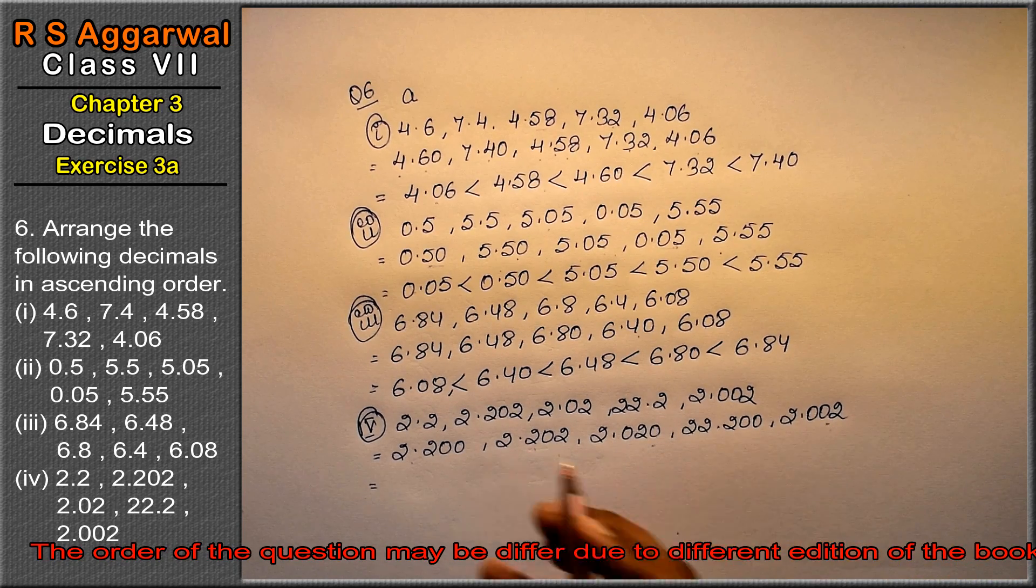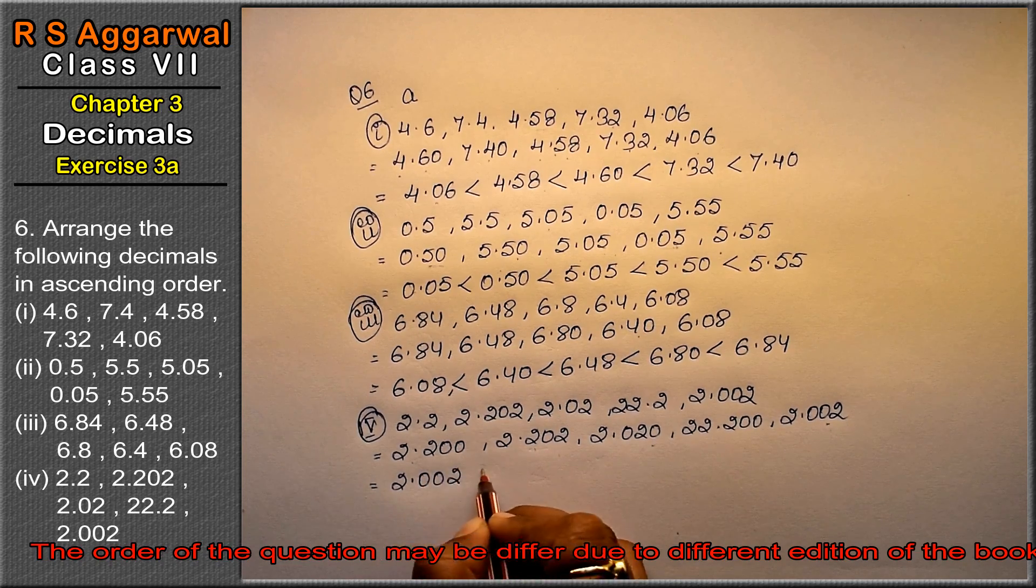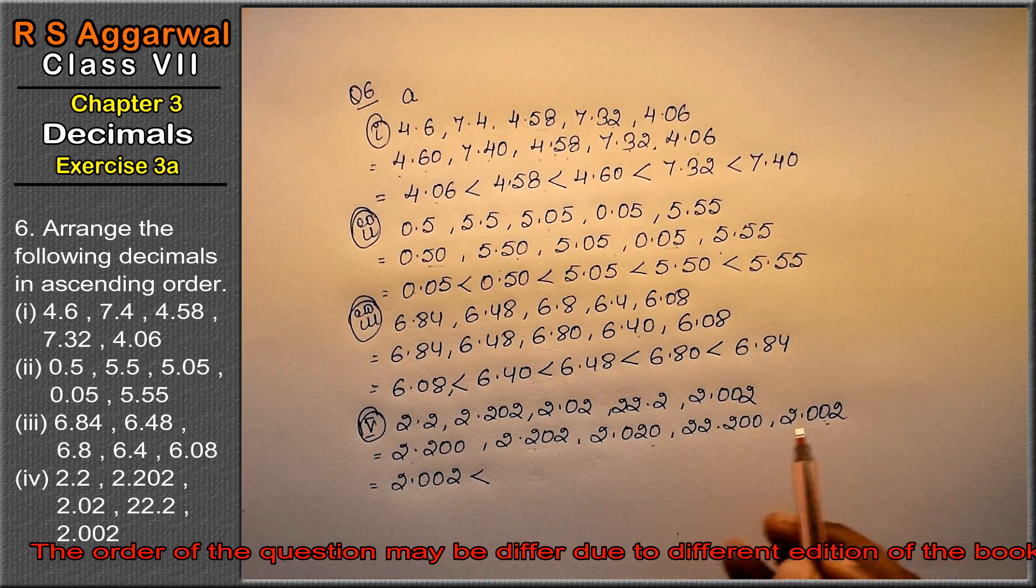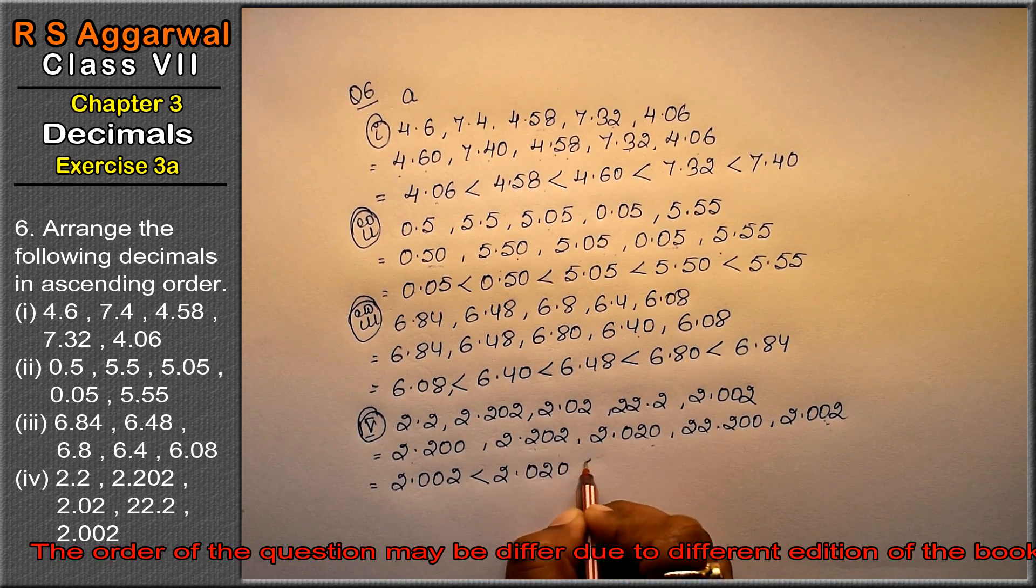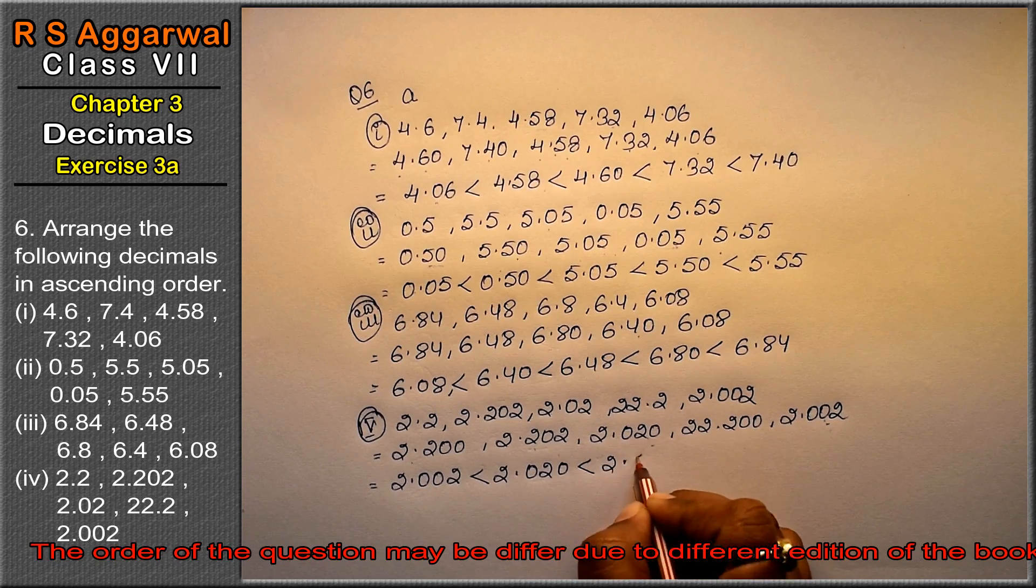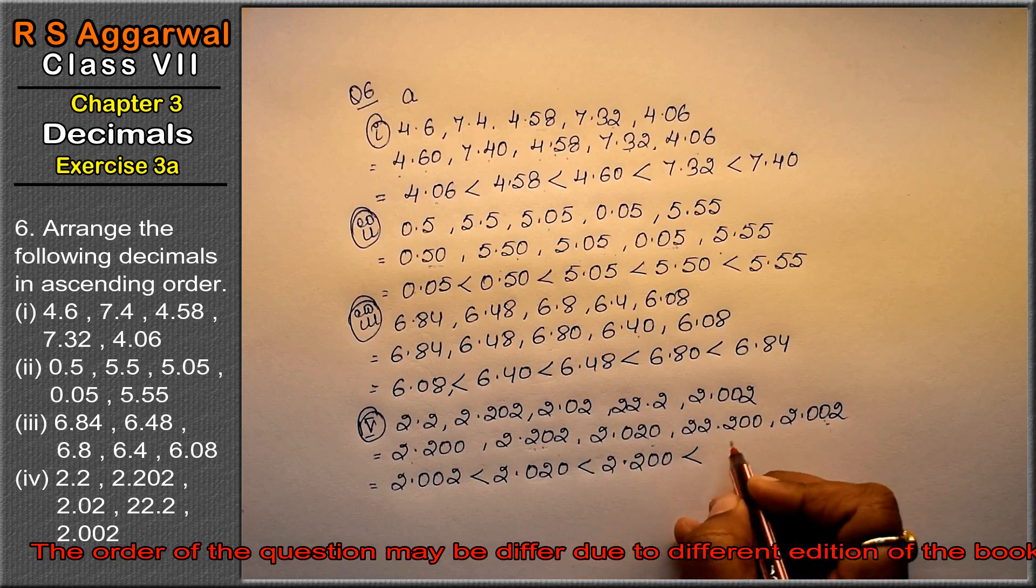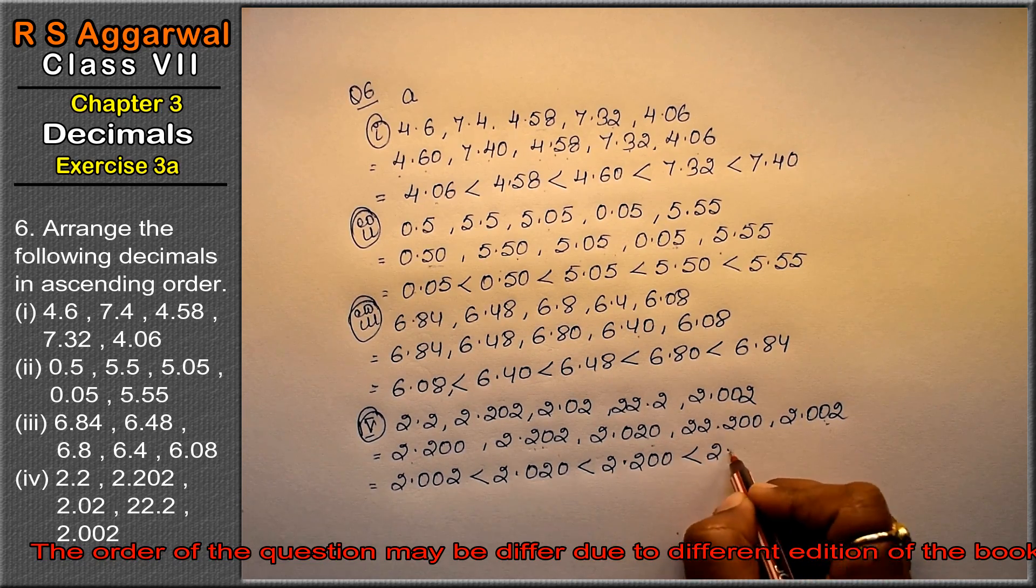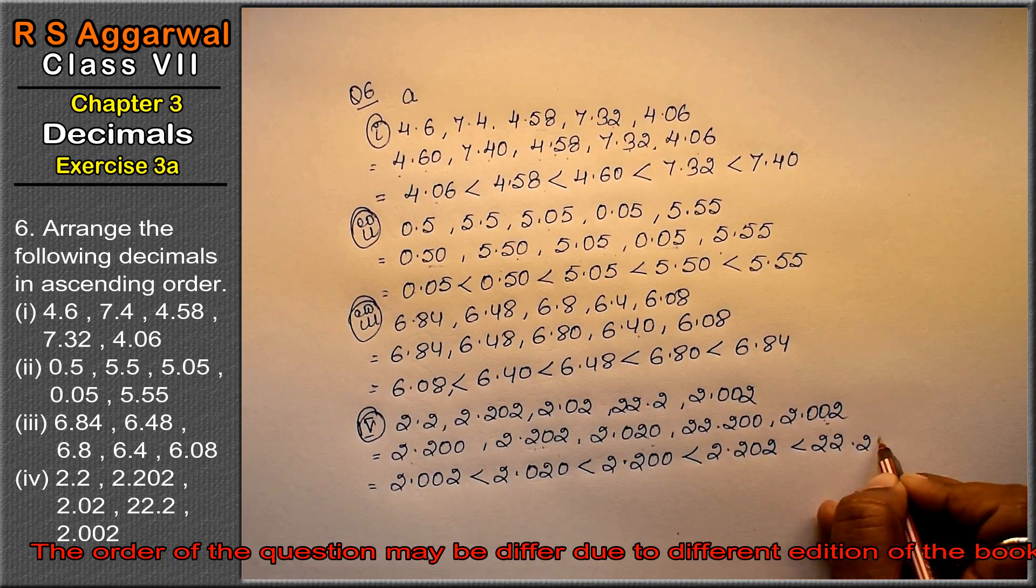What is the smallest one? 2.002, then 2.020, then 2.200, then 2.202, and then 22.200.